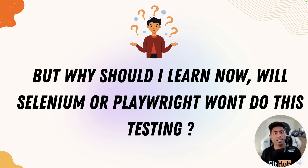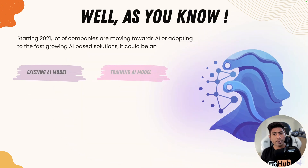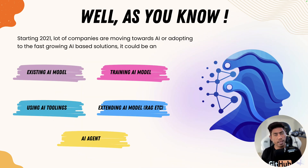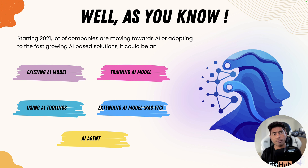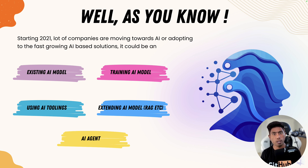Why is everything starting right now? Starting in 2021, a lot of companies are moving towards AI or adapting to fast AI-based solutions — whether using existing models like OpenAI, Claude, or Gemini, or training models using Hugging Face or open-source models like Llama, or using AI tooling to support the infrastructure needed for AI applications to work, or extending AI model capabilities using RAG.